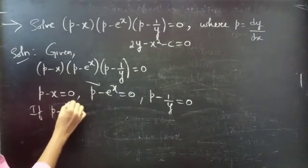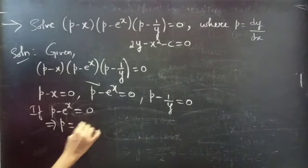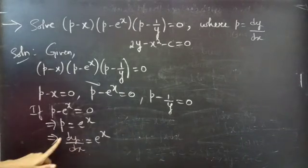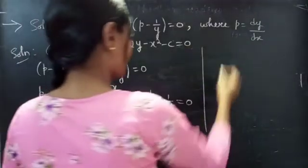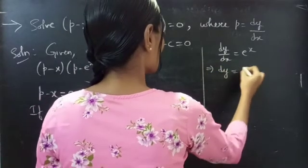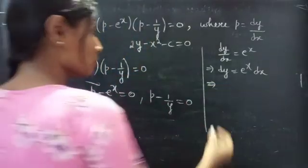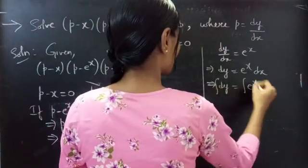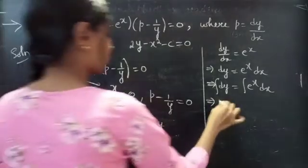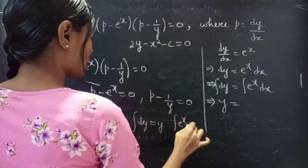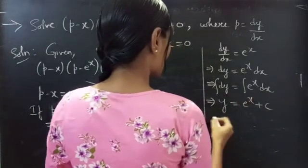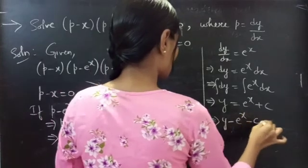If P minus e power x equals to 0, then P equals to e power x. Now put P equals to dy by dx. We get dy equals to e power x into dx, where variables are separable. Integrating on both sides, since integral dy equals to y and integral e power x dx equals to e power x plus C. Taking both terms to LHS, we get y minus e power x minus C equals to 0.